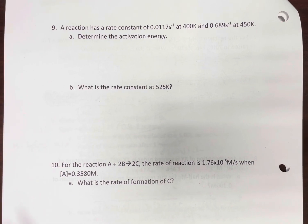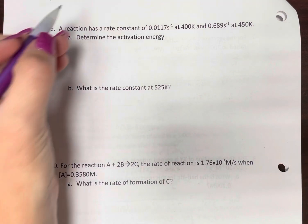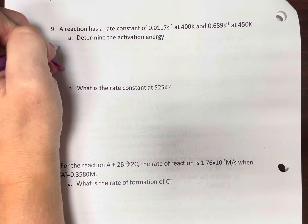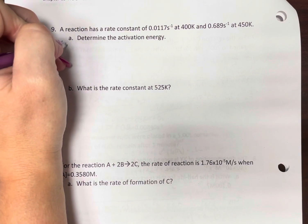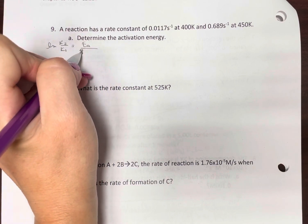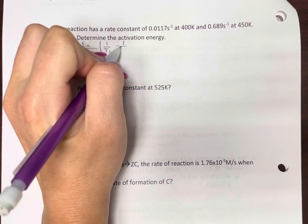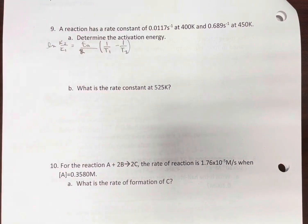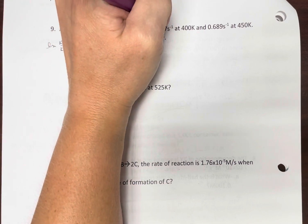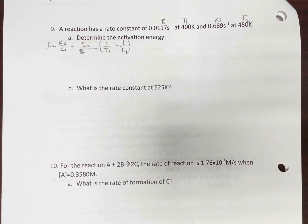We've already done one like this, it's not too bad. You can use whichever form you want. I like to use the regular one that I'll give you on the test: ln(K2/K1) equals activation energy over R, times (1/T1 minus 1/T2). Temperatures do have to be in Kelvins here — thankfully, they are. So that helps.